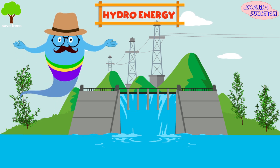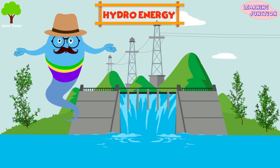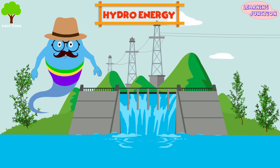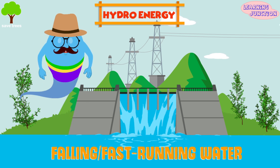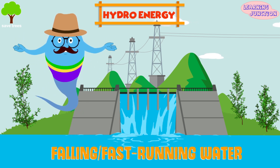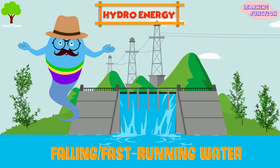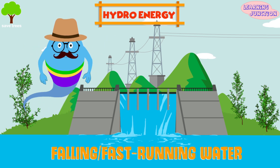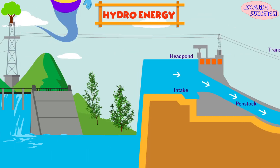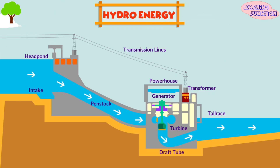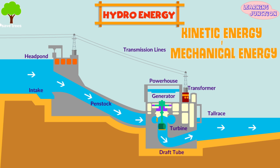Hydro energy is the power derived from the energy of falling or fast-running water. Hydro power plants capture the energy of falling water to produce electricity. A turbine changes the kinetic energy of water into mechanical energy, and then a generator changes the mechanical energy into electrical energy.